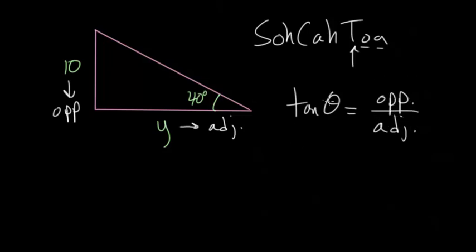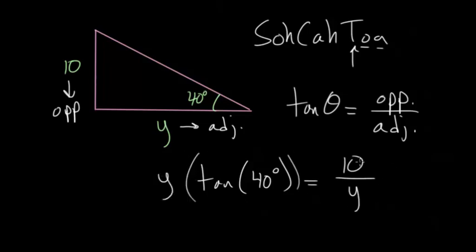And so we can plug in our numbers here since we know the angle is 40 degrees, and we're comparing this to the opposite divided by the adjacent where the opposite is 10 and the adjacent is y. And now we want to get y out of the denominator, so we're going to multiply everything by y, and they cancel out on the right hand side. So we get y times the tangent of 40 degrees equals 10.